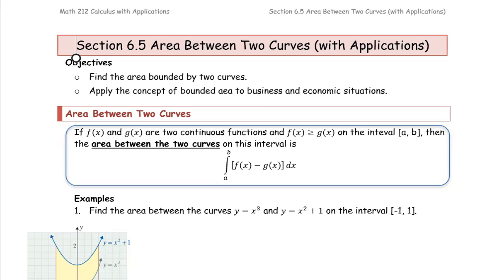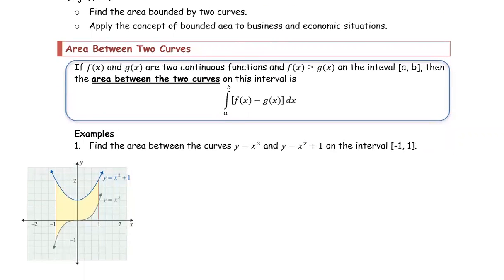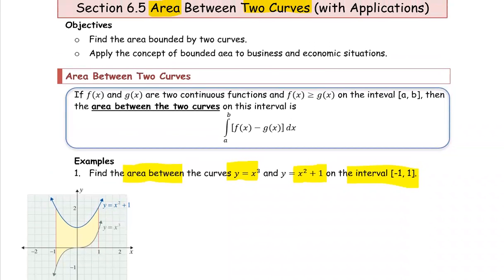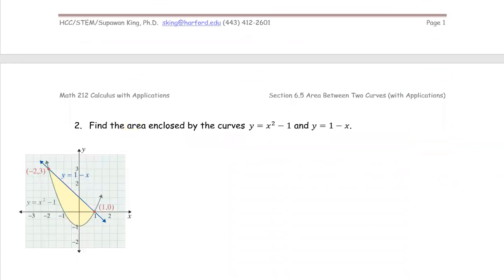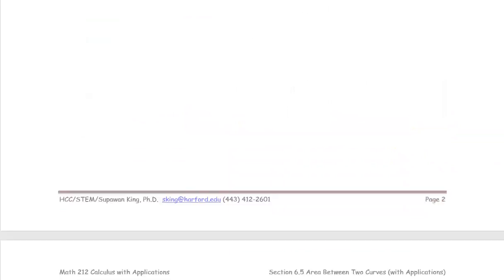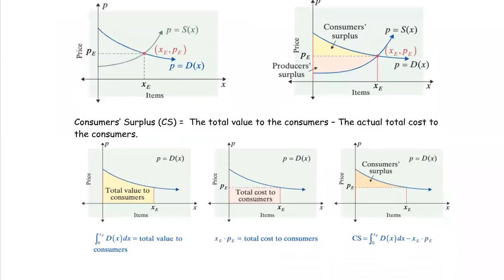For section 6.5, area between two curves, we're going to start with skill problems where two functions are provided and you find the area between them on a given interval. If a graph is provided that's helpful; if not, use a graphing tool to identify the area and set up the definite integration. The application we'll see later involves business and economics: consumer surplus, producer surplus, and the equilibrium point.